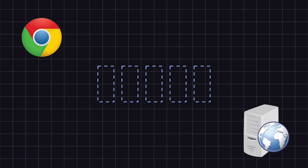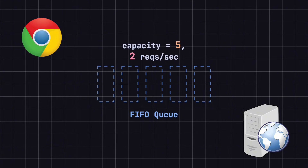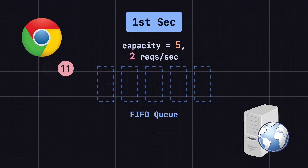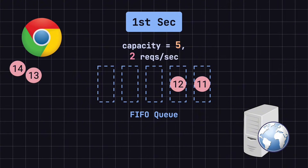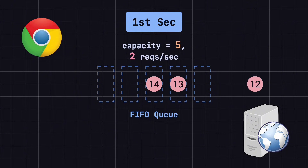Let's look at an example. In a computer system, the leaky bucket can be seen as a first-in-first-out (FIFO) queue. Suppose we have a queue with a capacity of five, and the system can process two requests per second. At the start of the first second, a user sends four requests. These requests are added to the queue. Since the system processes two requests per second, it handles the first two requests, leaving two in the queue.